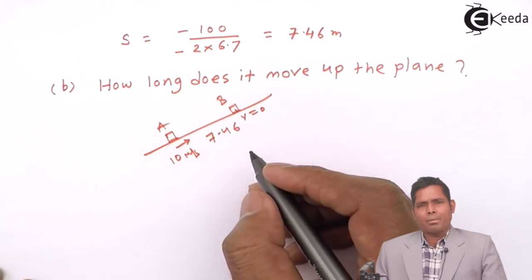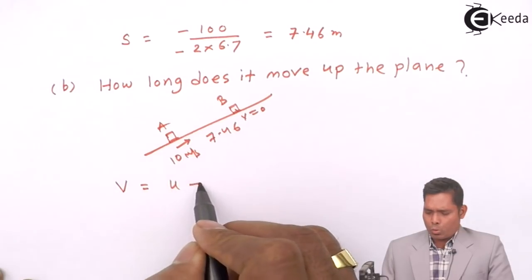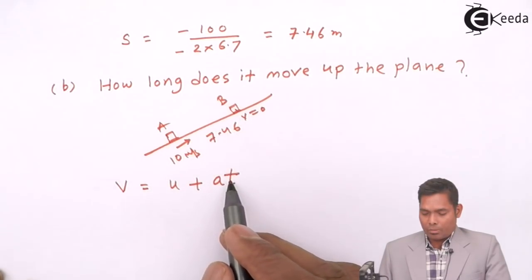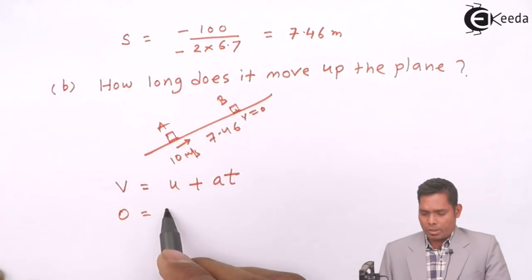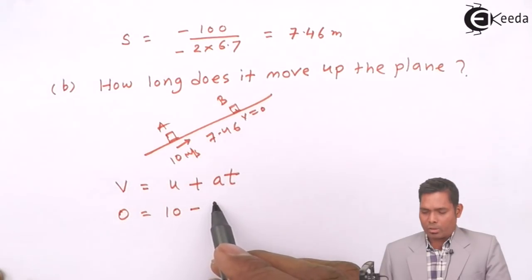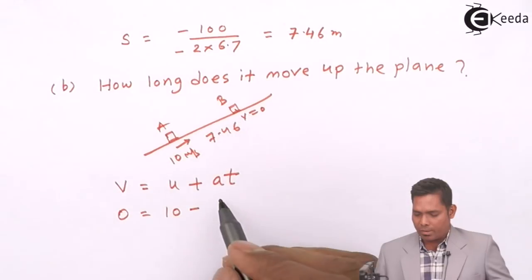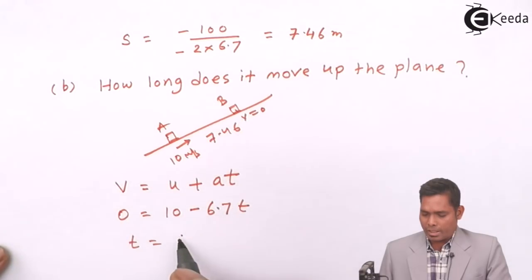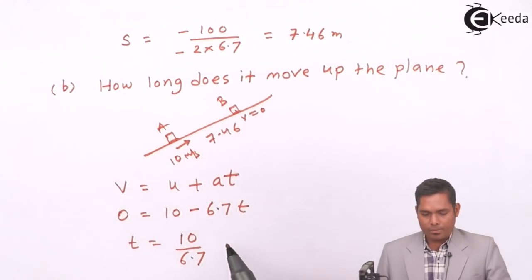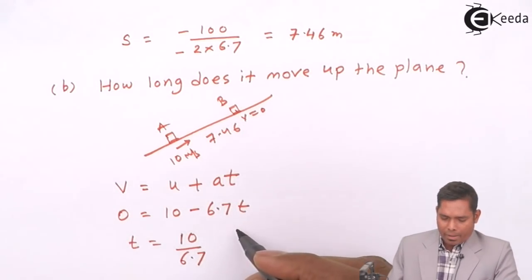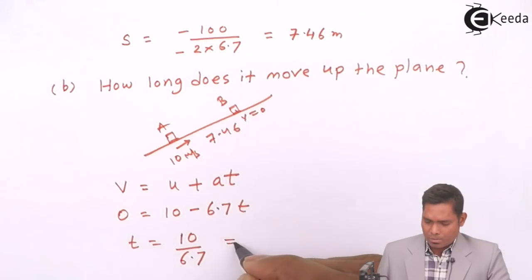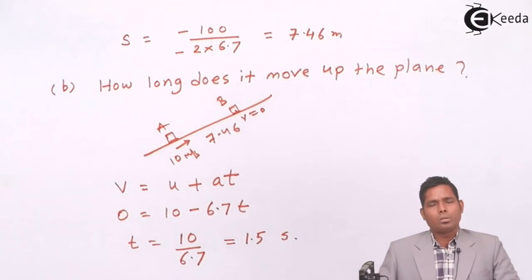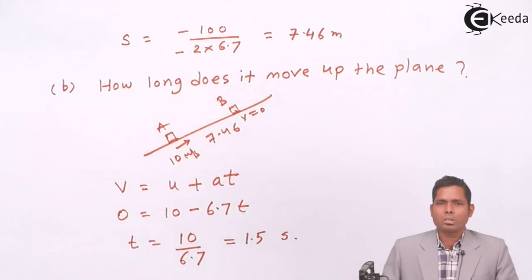So to find the time, I will use the equation V = U + AT. In that equation I will find the time T. V is 0, U is 10. This acceleration I got how much? The acceleration I got minus 6.7, so 6.7 into T. Therefore T equals, this comes to this side so it becomes positive, 10 divided by 6.7. It comes out to be approximately 1.5 seconds. So time for the motion of this block up the inclined plane is this.